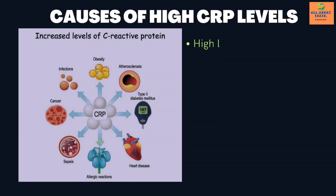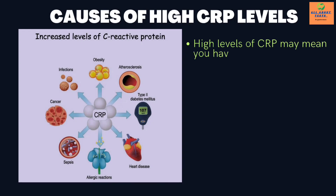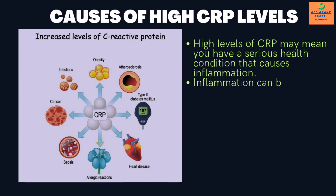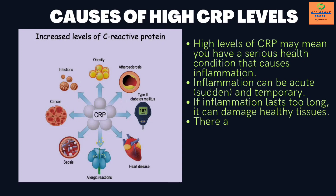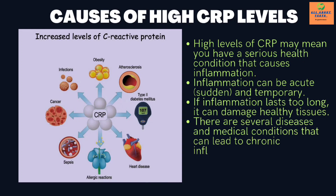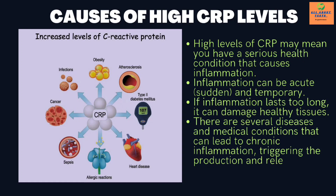High levels of CRP may mean you have a serious health condition that causes inflammation. Inflammation can be acute, sudden, and temporary. If inflammation lasts too long, it can damage healthy tissues. There are several diseases and medical conditions that can lead to chronic inflammation, triggering the production and release of CRP in the blood.